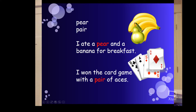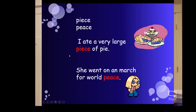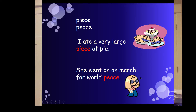Pear versus pair. 'I ate a pear, P-E-A-R, and a banana for breakfast' — that's the fruit. 'I won the card game with a pair of aces' — totally different. Then peace versus piece. 'I ate a very large piece of pie' — there's that I again, like I totally ate that pie. 'She went on a march for world peace' — peace like this little hippie girl.